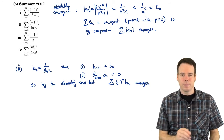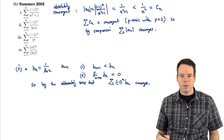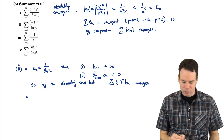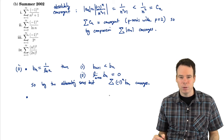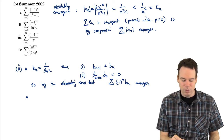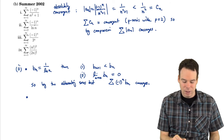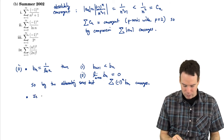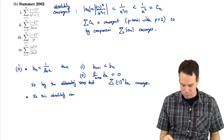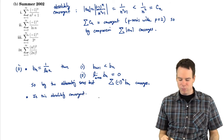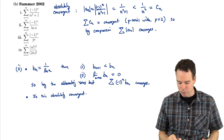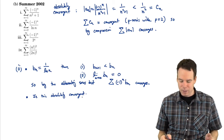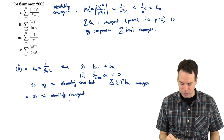So the series converges. Now, does it converge absolutely? We did the alternating series test, which relied on the fact that the terms were alternating to conclude convergence. But I want to know the deeper question: would it converge if the negative signs weren't even there? Is this absolutely convergent? It's a much stronger question. If we get absolute convergence, then we get conditional convergence by default. But if we have conditional convergence, we don't necessarily get absolute convergence. So we want to check.